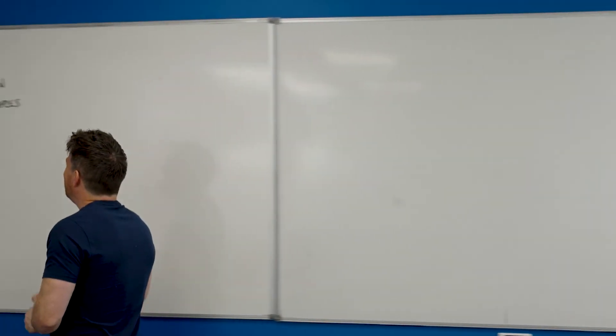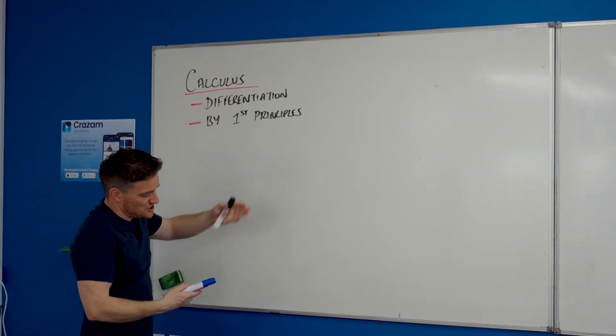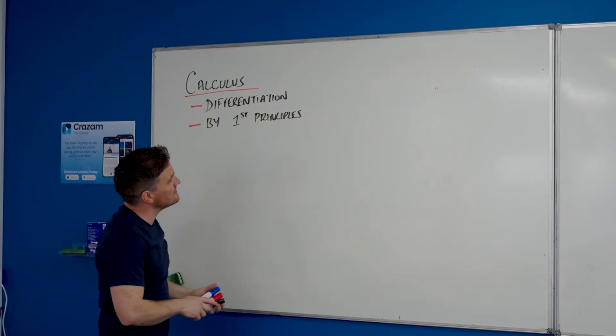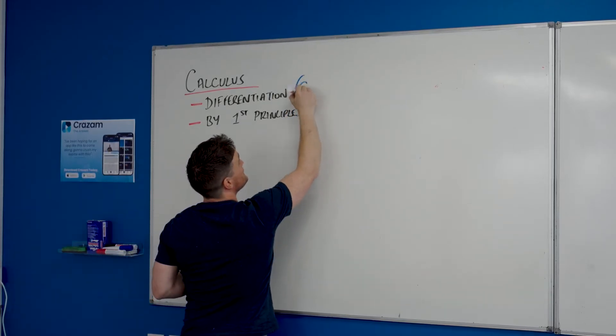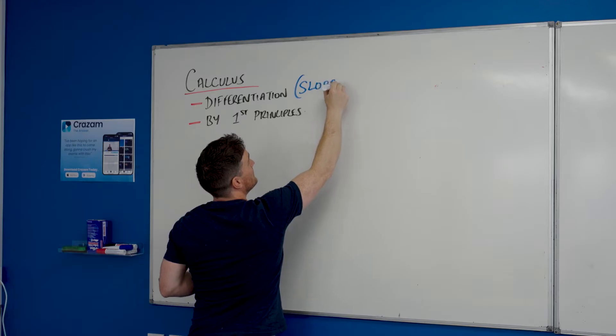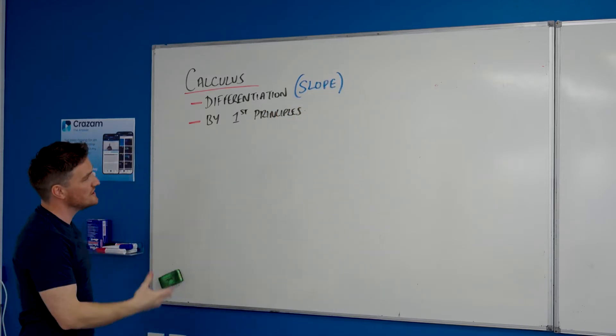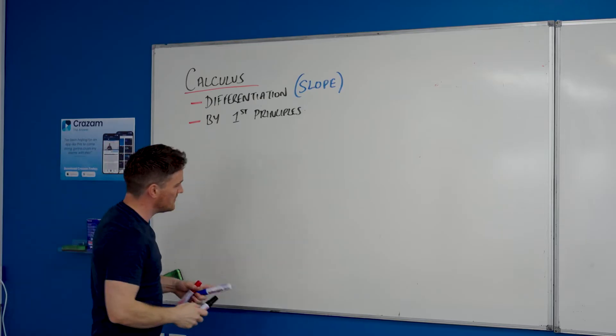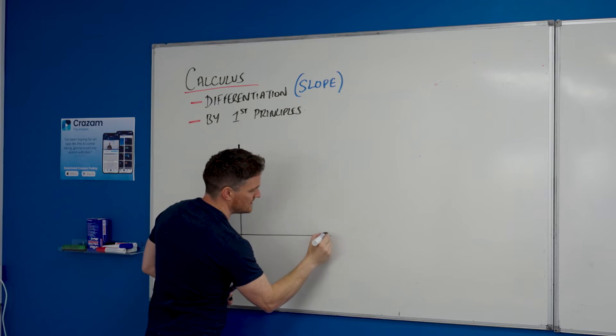All the way back over here, what you need to get your head around first and foremost is: what is differentiation? And really I'm going to summarize it up in one word—all differentiation is is slope. When you see the word differentiate or differentiation or calculus, I want you to be thinking about slope.